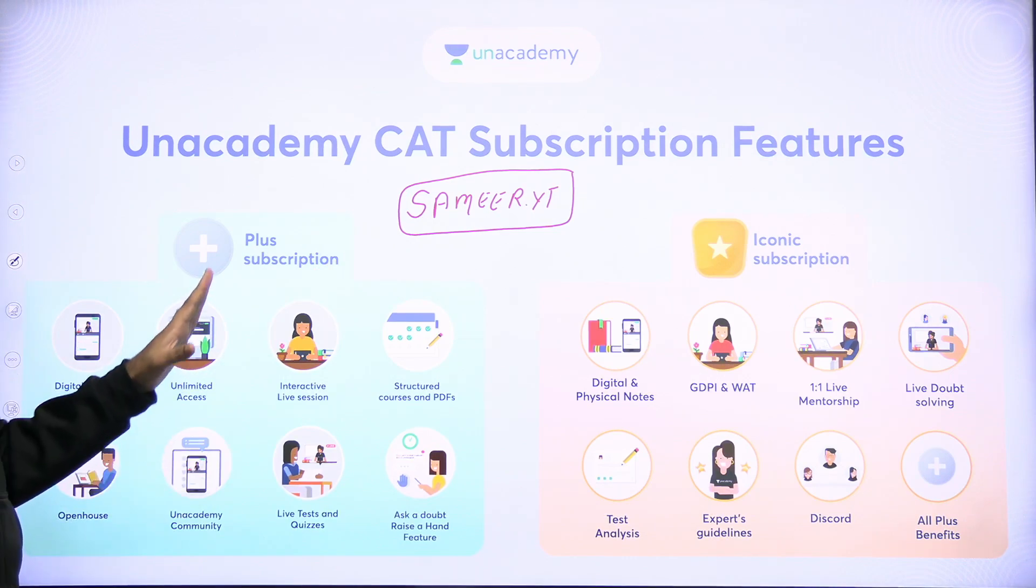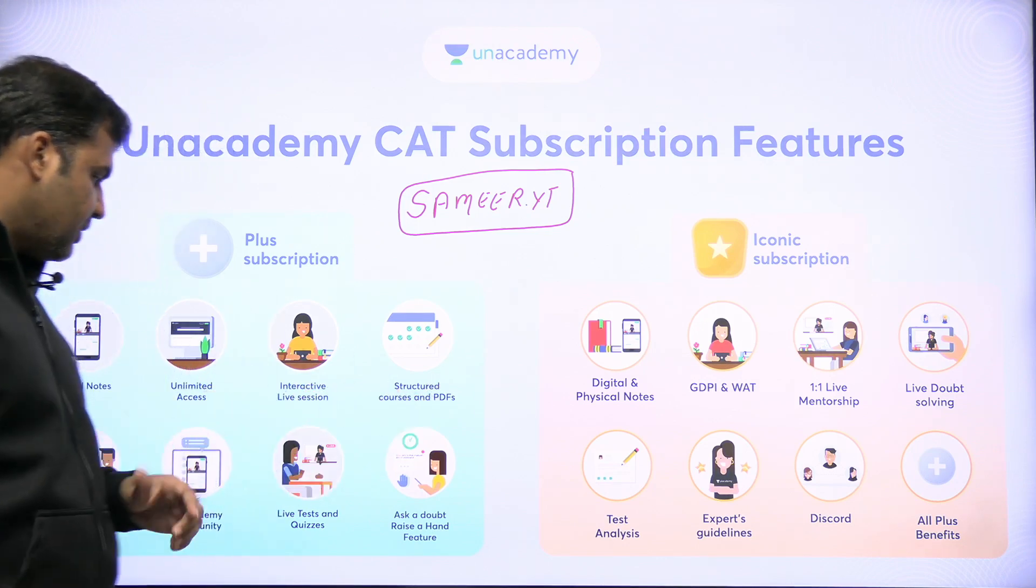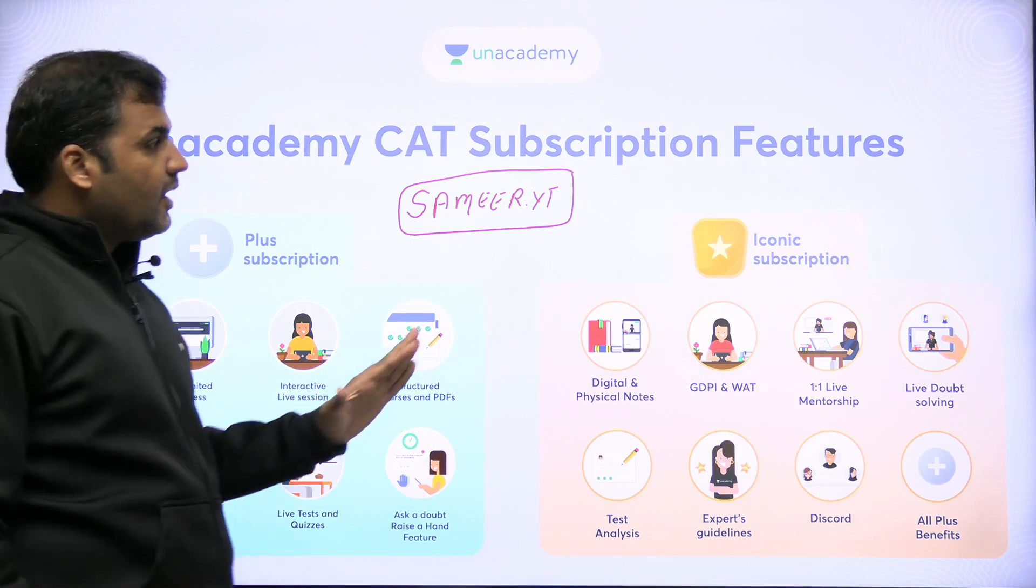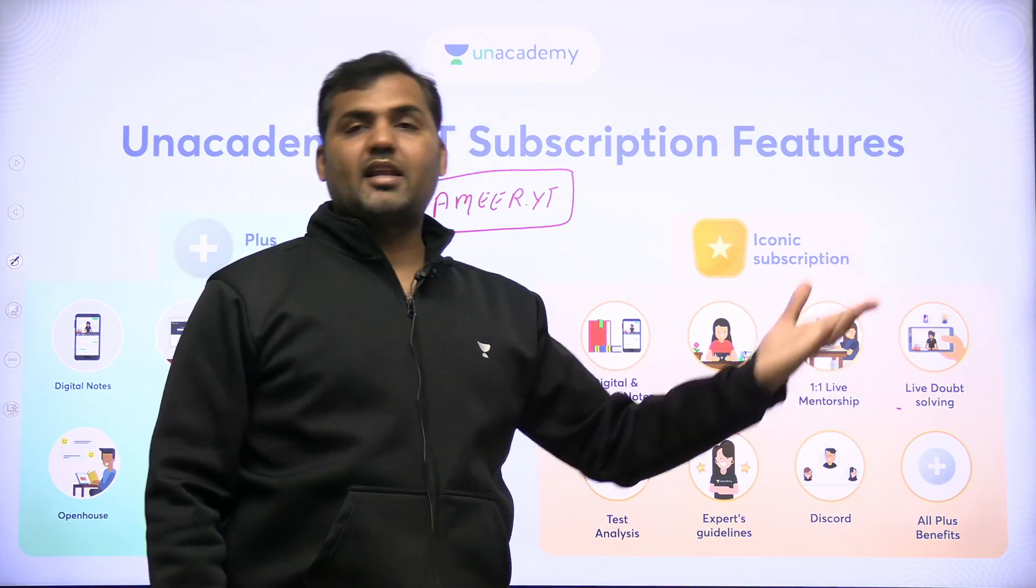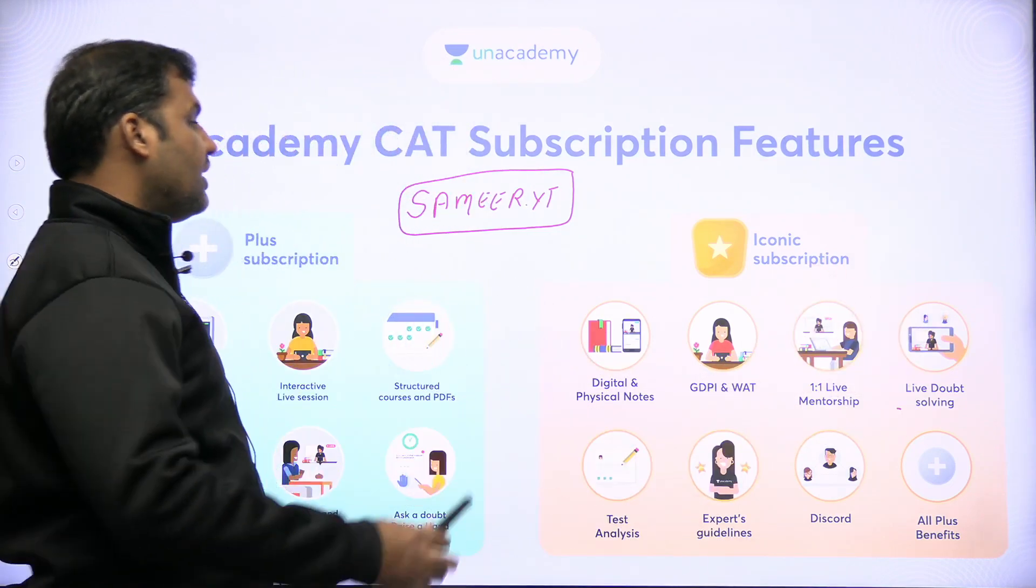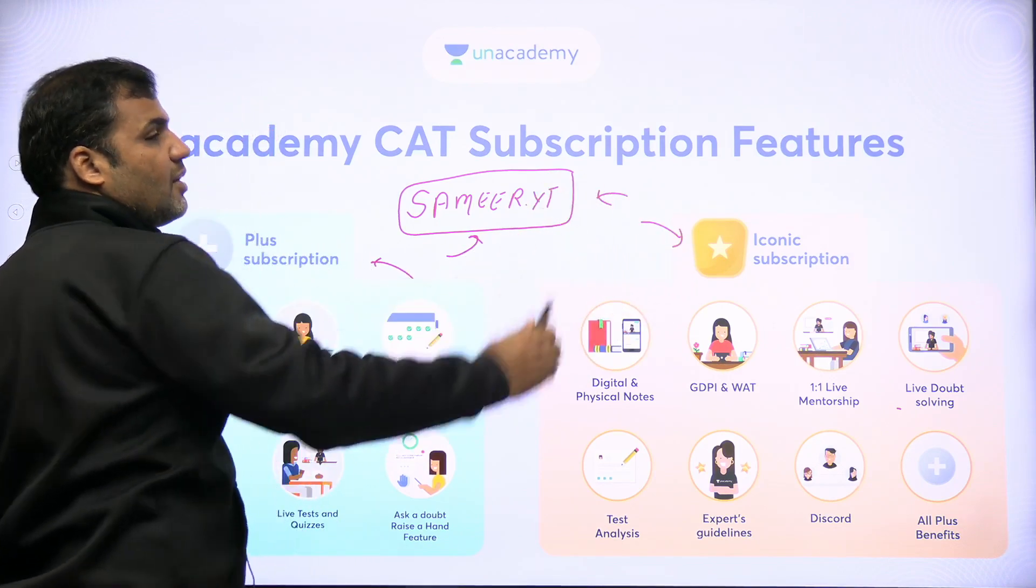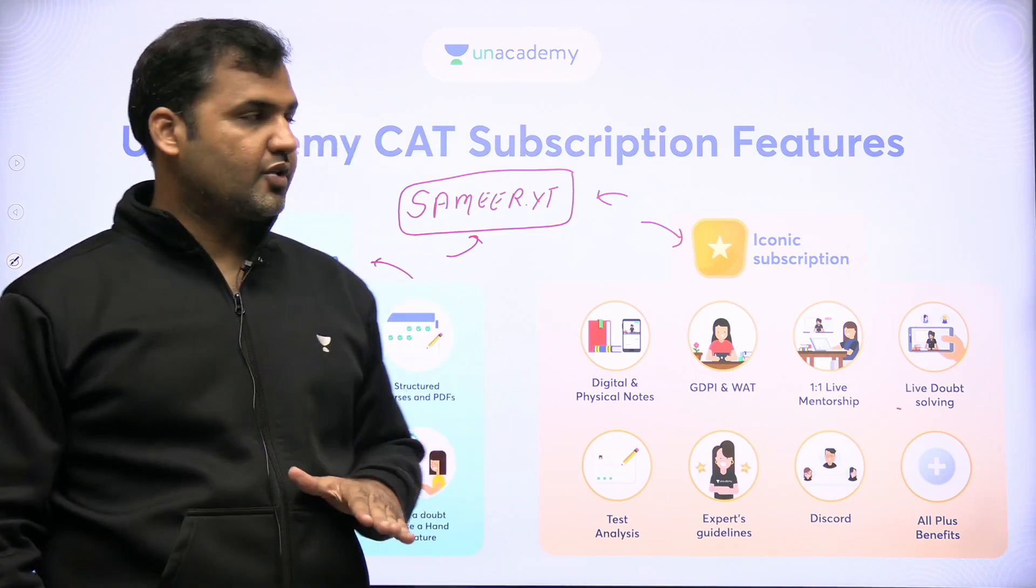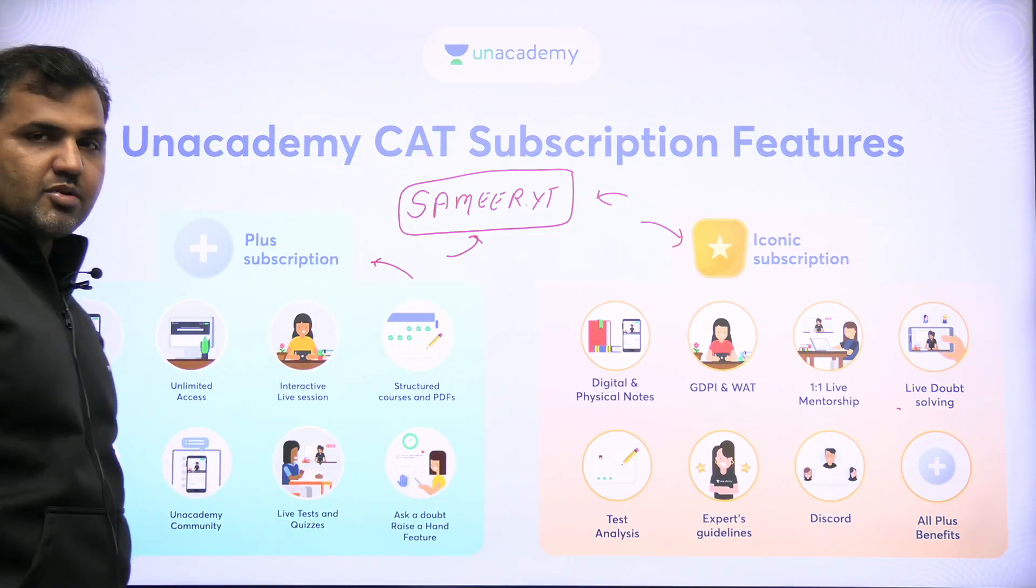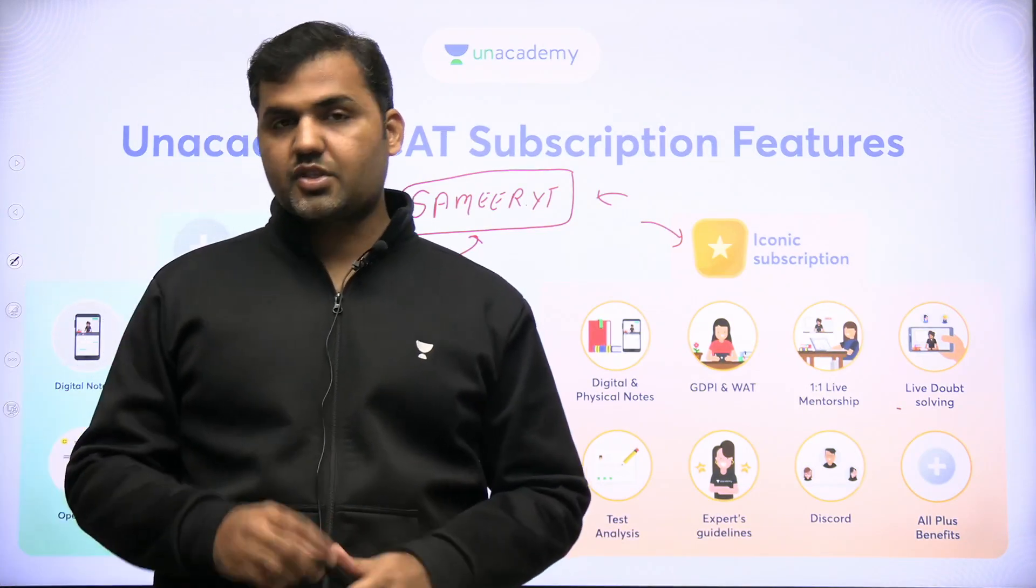For plus or iconic subscription, these are the benefits: you'll be getting digital notes, unlimited access, interactive live sessions, structured courses and PDFs. In iconic subscription you'll be getting digital and physical notes, GD and VAT, one-to-one live mentorship and live doubt solving. Using this code whether you go for plus or iconic, you'll be getting my personal one-to-one mentorship and counseling. Use this code for plus subscription on Unacademy and to attend my batches. Thank you so much for watching. See you in the next part.